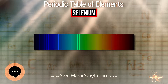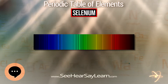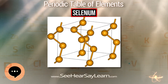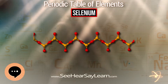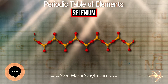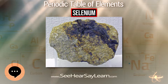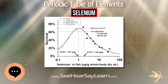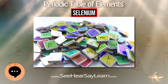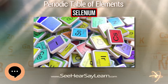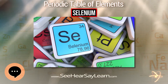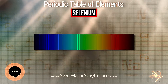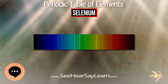Salts of selenious acid are called selenites; these include silver selenite and sodium selenite. Hydrogen sulfide reacts with aqueous selenious acid to produce selenium disulfide. Selenium disulfide consists of eight-membered rings and has an approximate composition of SeS2, with individual rings varying in composition such as Se4S4 and Se2S6. Selenium disulfide has been used in shampoo as an anti-dandruff agent, an inhibitor in polymer chemistry, a glass dye, and a reducing agent in fireworks.